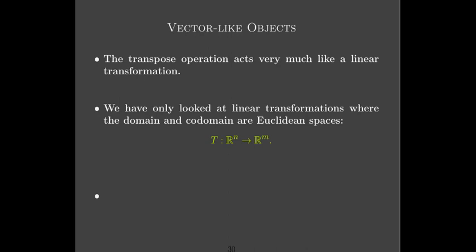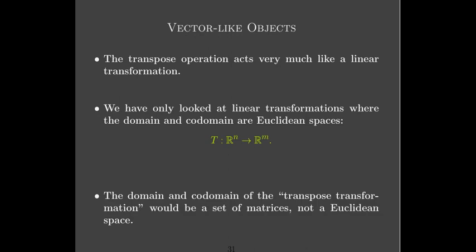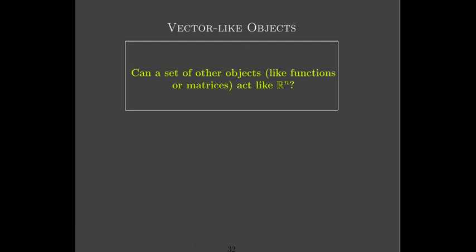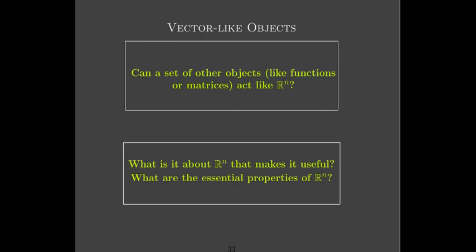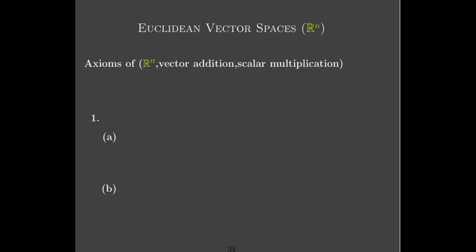So the question is: can other sets of objects — like sets of functions or sets of matrices — have the same essential properties as Rn? Can we do linear algebra with those sets? To answer that, we should pause and understand what makes Euclidean space useful and what its essential properties are.